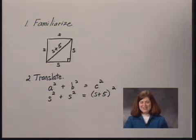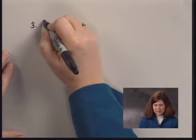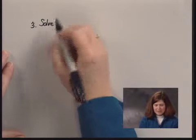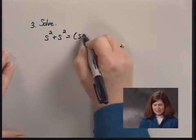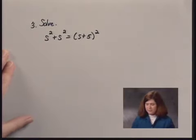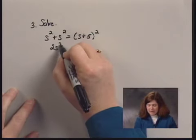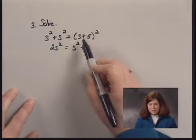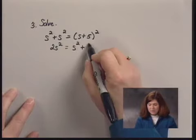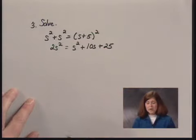I have an equation that I can solve. The equation is S squared plus S squared equals S plus 5, all squared. I can combine terms and get 2S squared on the left side. Expanding the right side, I have S squared plus 10S plus 25, using the rule for squaring a binomial.